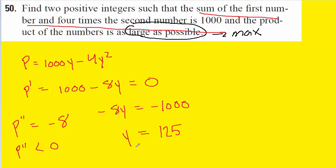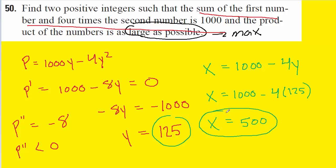Now we can go back and solve for x. Recall that x equals 1000 minus 4y. Substituting y equals 125 gives us x equals 500. So when x equals 500 and y equals 125, the sum will equal 1,000 and the product will be as large as possible. Note that the sum refers not to x plus y, but x plus 4y, which equals 1,000.